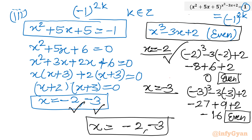Collecting all solutions from Method 1: from Case 1 we got x = -1 and x = -4; from Case 2 we got x = 1 and x = -2; from Case 3 we got x = -2 and x = -3. The overall solution set is x = ±1, -2, -3, -4.